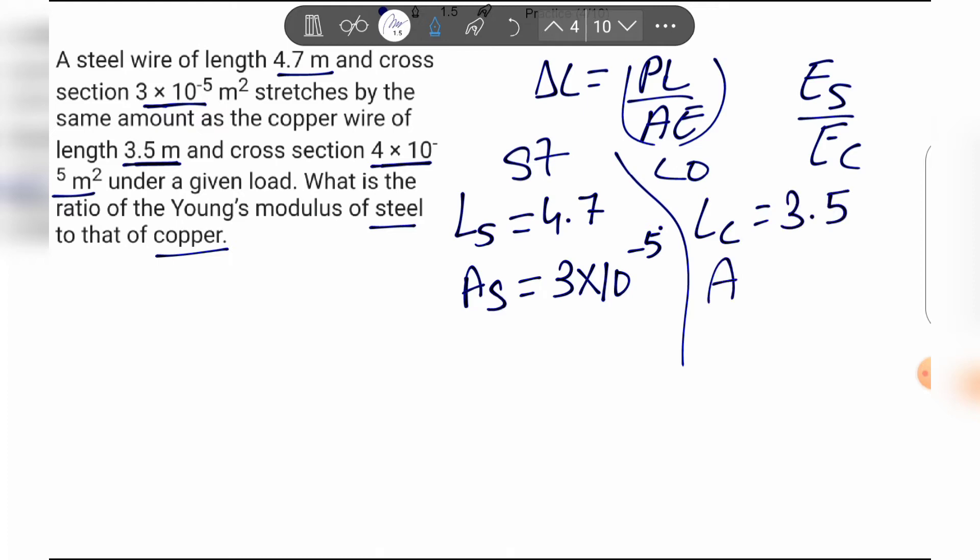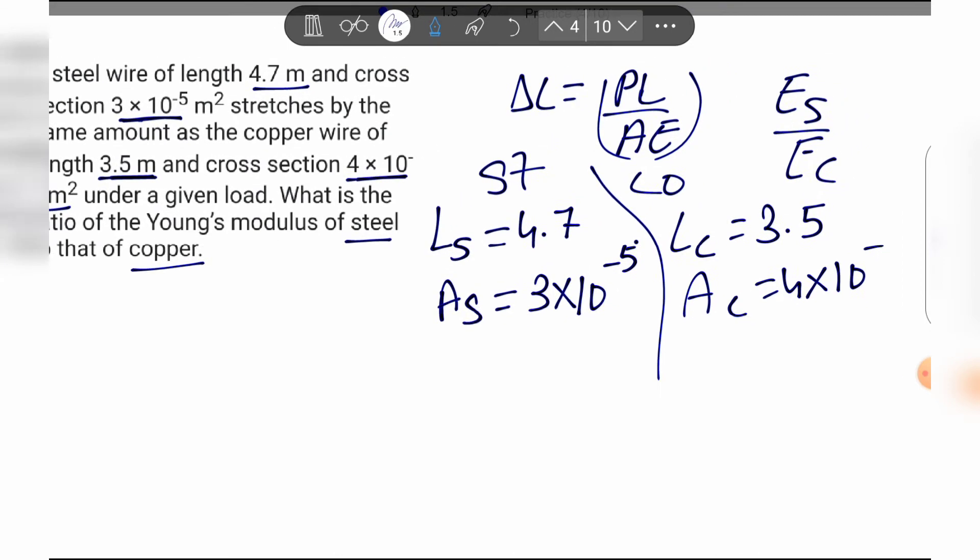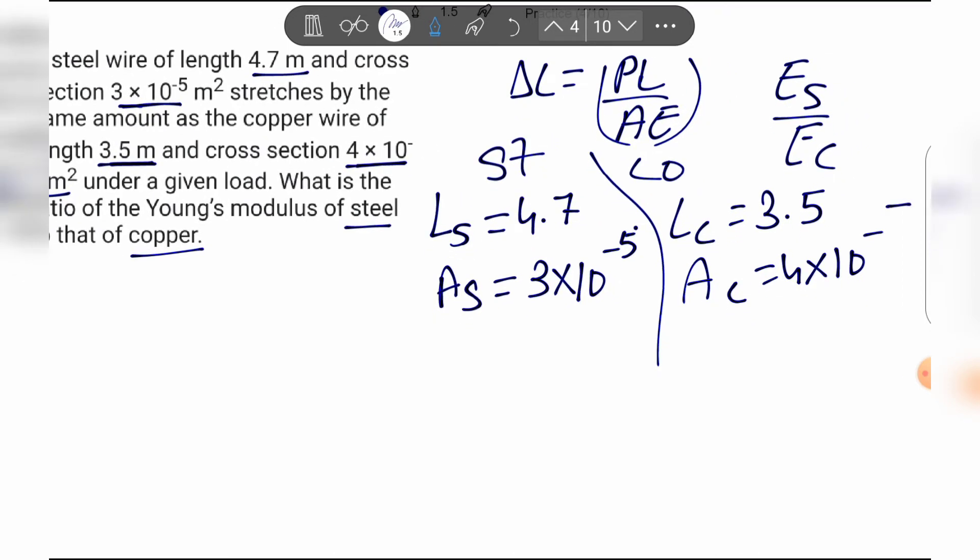Copper area is 4×10^-5 m². We have to substitute these parameters into the formula and find the elongation condition, as the same load applies to both wires.